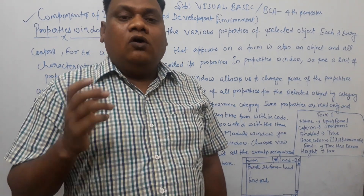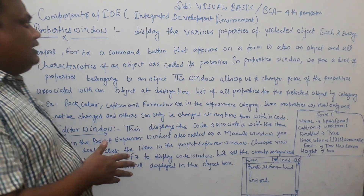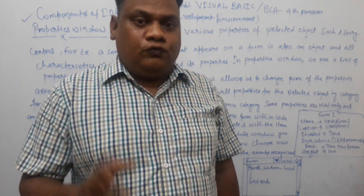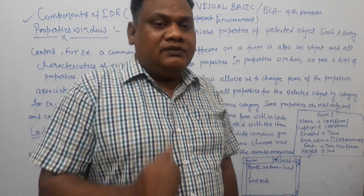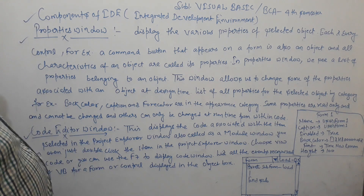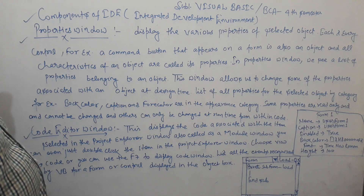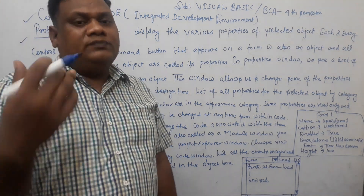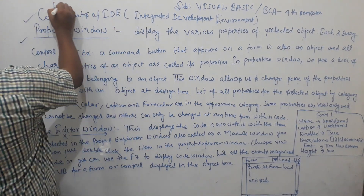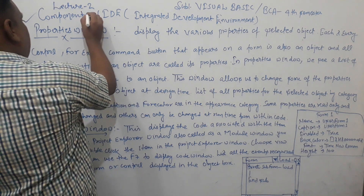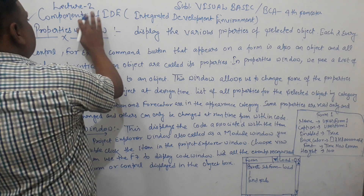You will need to know what each component does and how we use it. In lecture 1, we covered the components of IDE: the Project Explorer Window and the Form Designer Window. In this lecture 2, we have the Properties Window and the Code Editor Window, which we will discuss today. And in sequence 3, we will look at the Form Layout Window.